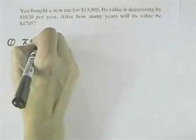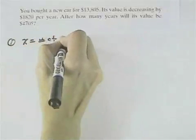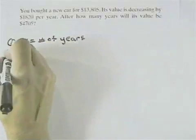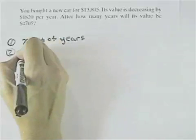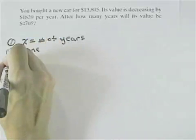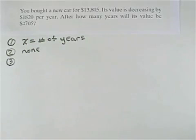Let's let X equal the number of years until the value has decreased. Step two is to identify any other unknowns in terms of X. There are none, so we can skip step two. Step three is to come up with an equation that relates our variable and the information given.